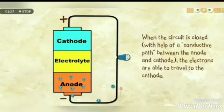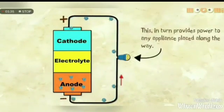When the circuit is closed with the help of a conductive path between the anode and cathode, the electrons are able to travel to the cathode. This in turn provides power to any appliance placed along the way.